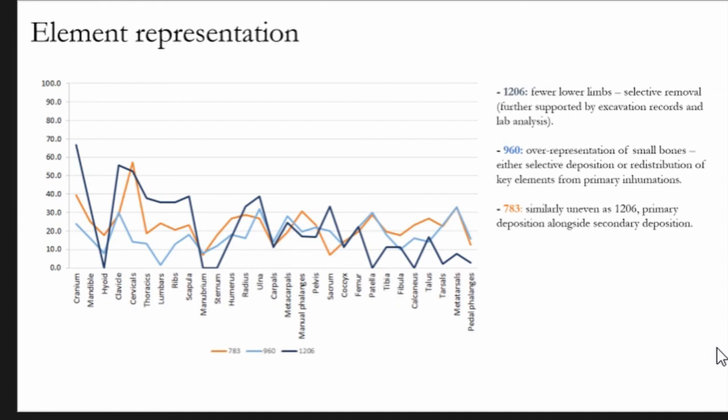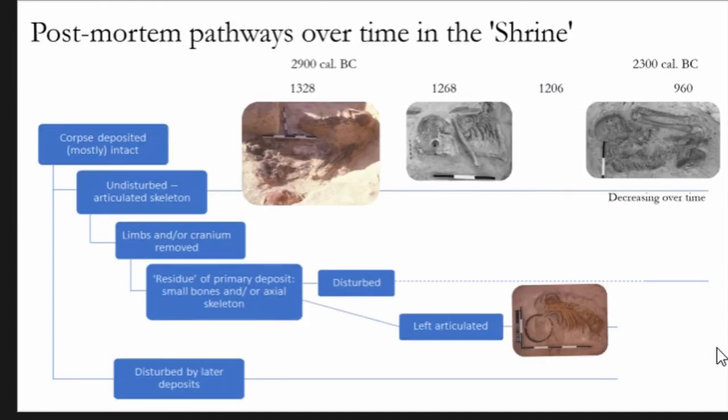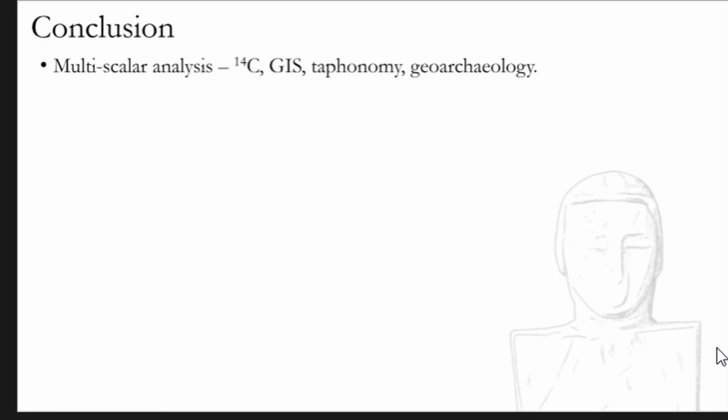So just to draw this together with the remodeling events that Owen's been looking at, similar practices are happening in the shrine over a long length of time, but we see a decreasing number of individuals left in articulation. What we see is a reduction of the body—the cranium being removed and the long bones being removed—and occasionally the axial skeleton remains in articulation and then sometimes it's disturbed. The visibility of these practices is quite difficult to get at through the excavation records, but I think it fluctuates over time as to whether they are disturbed or not, and most likely also relates to these events of remodeling which Owen was just talking about.